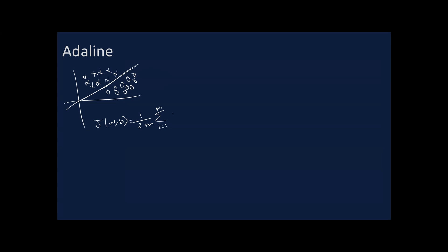We had this cost function, and then we can take the derivative of that cost function, which is the slope. Then we started iterating with that slope and updating our weights until we try to reach the global minimum in that weight-cost relationship curve.